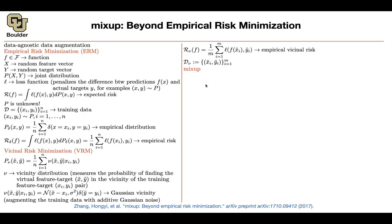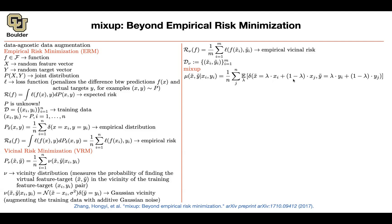So what is mix-up? It's just another mu — another distribution. Previously you had the empirical distribution, or the vicinal distribution. Now you can have mix-up. Mathematically, what are you actually doing? You take a pair of data x_i and x_j — two images from your dataset — and linearly combine them. You look at the line between these two images, and it ends up being an image in between. Maybe this is the image of a dog, that's the image of a cat; as soon as you linearly combine them with a convex combination (lambda is from zero to one), you're creating an image of a dog-cat.